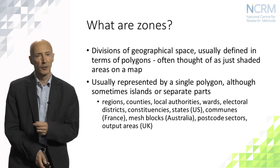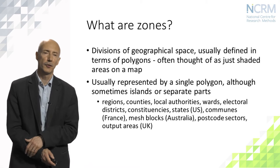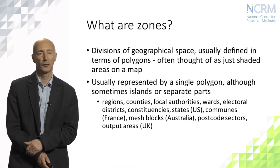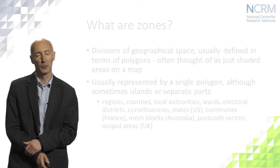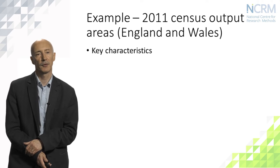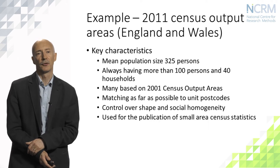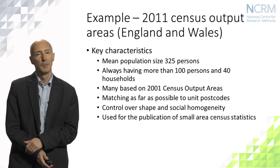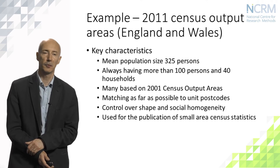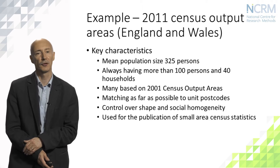To take one of those in a little more detail, we'll think about the 2011 census output areas in England and Wales. It's worth reviewing the basic characteristics because they tell us something about the way in which those zones have been created. The mean population size is 325 people, but importantly they must always have more than 100 people and more than 40 households to preserve confidentiality, and many of them were in fact based on the output areas from the previous census in 2001.